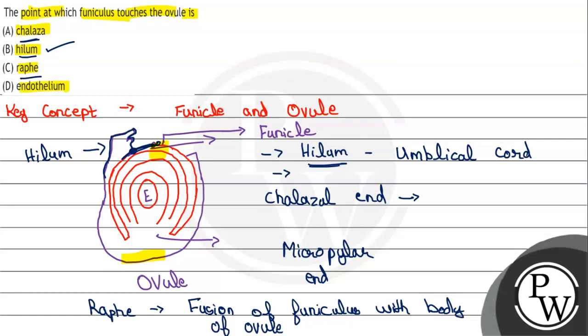Now the last one is endothelium. If we talk about endothelium, it is a special type of tissue present around the embryo sac. This is the embryo sac, and around the embryo sac, special tissue is present.